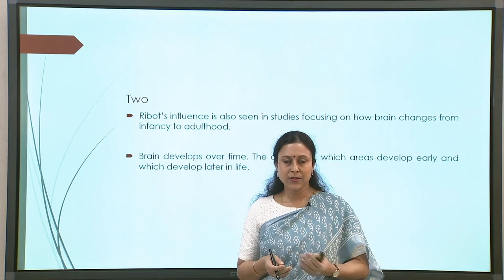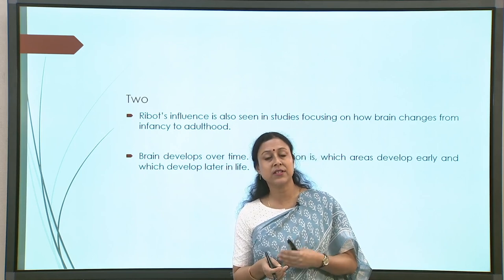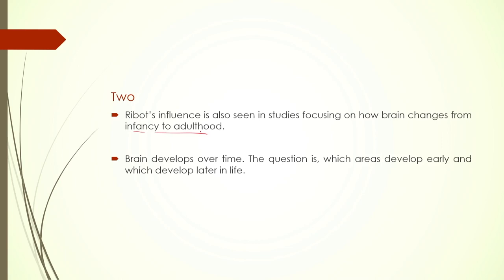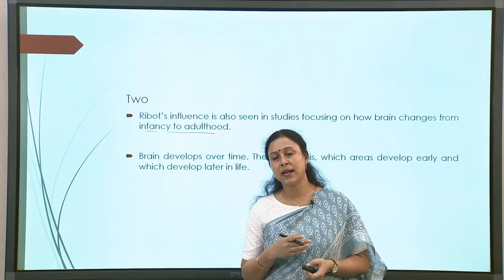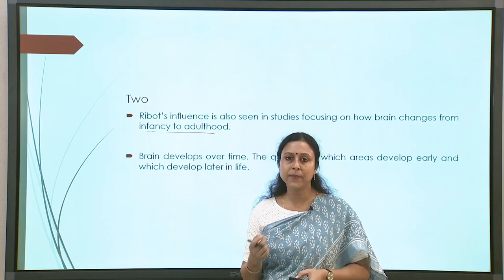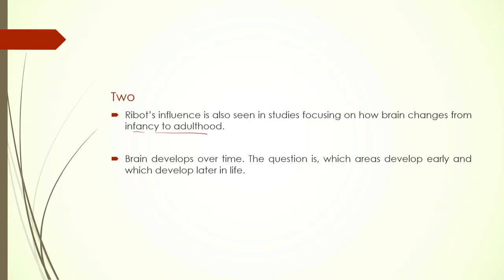The second part is connected to the first: it is dependent on how brain development happens, what stages of changes we notice from infancy to adulthood. One interesting thing about the human brain is that it continues to develop after birth for quite some time. As one ages through various socio-cultural and other experiences, the brain is simultaneously growing. Language is also one of the aspects in the environment, so the question is which areas develop early and which develop later in life.